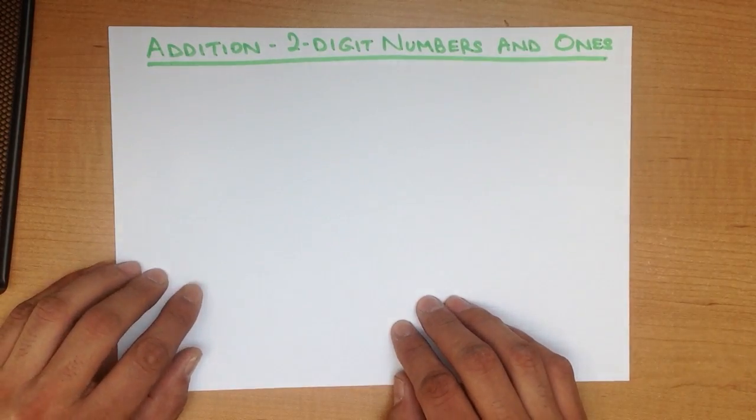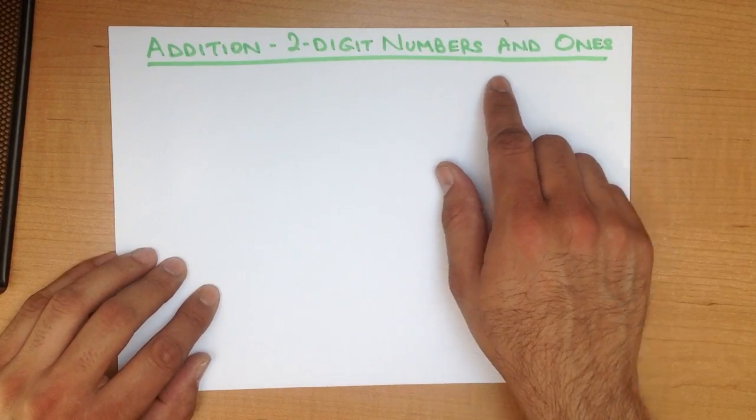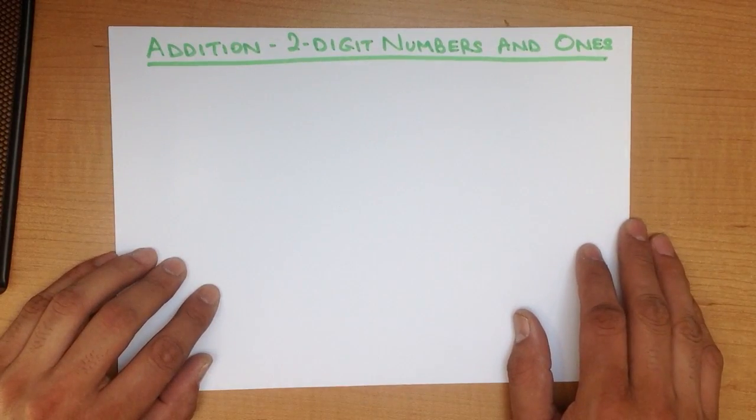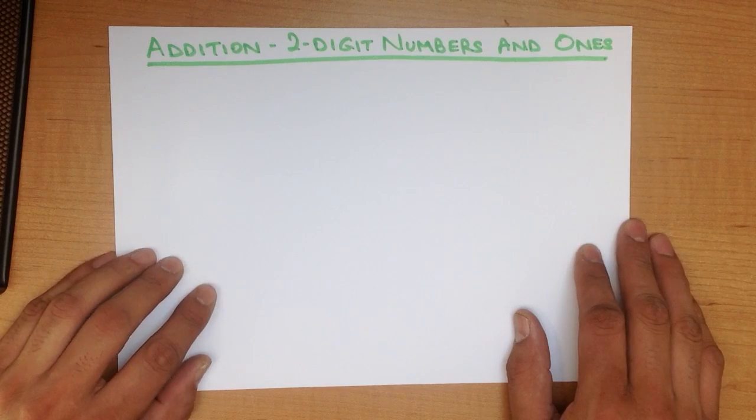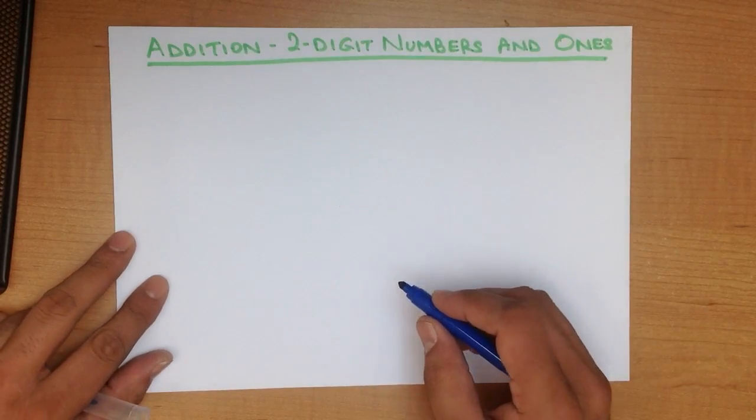In this tutorial, we are going to go through addition of two-digit numbers and ones. We are going to use the head and fingers method. Let's start with a nice easy example.